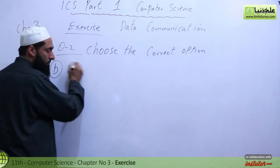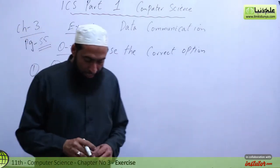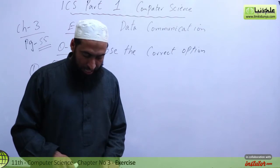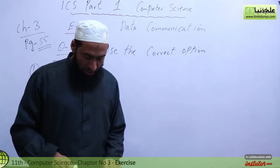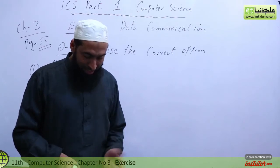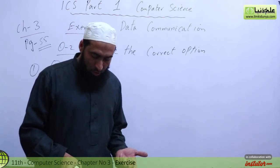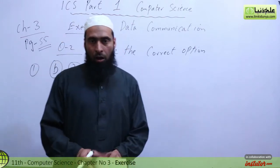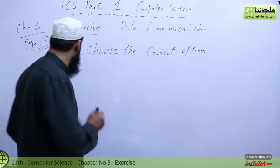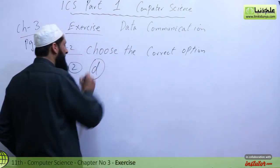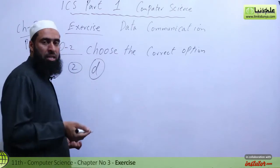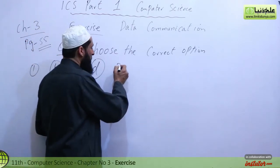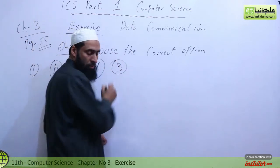Number 2: Data communication requires only a sender, a receiver, a transmission modem, or all of the above. The answer is D — all of the above. We need a sender, a receiver, and a communication medium.